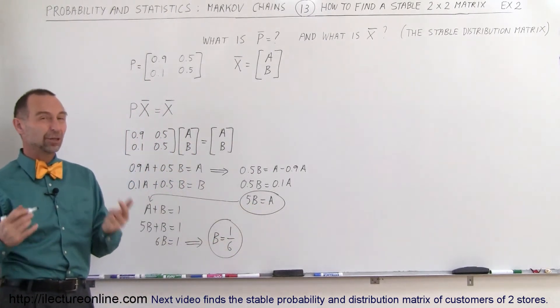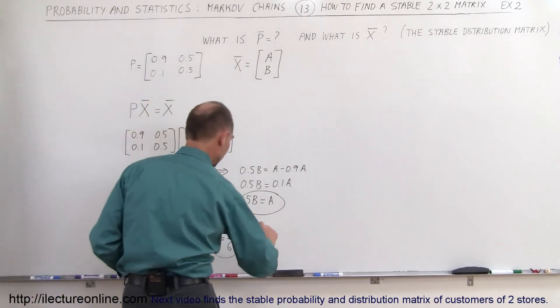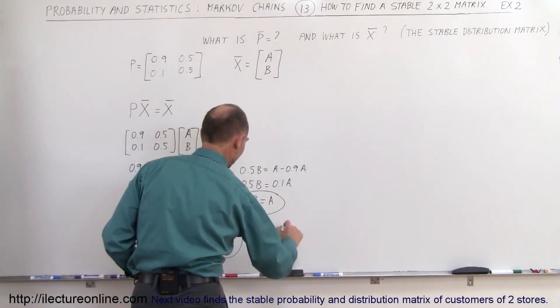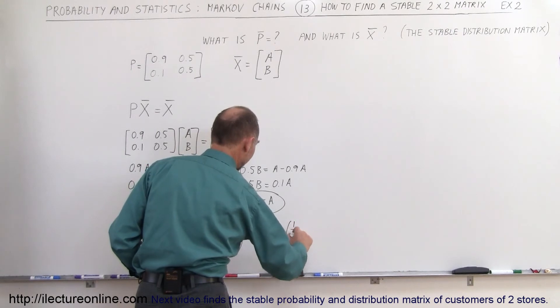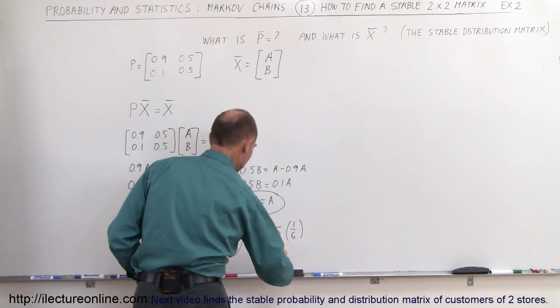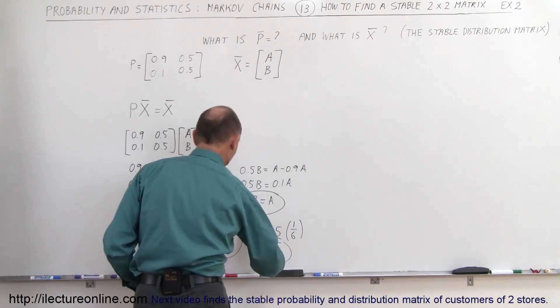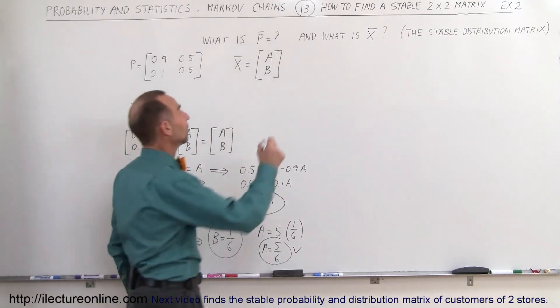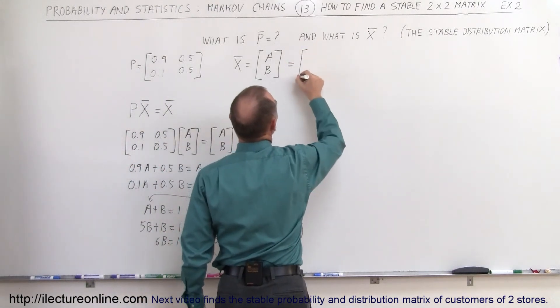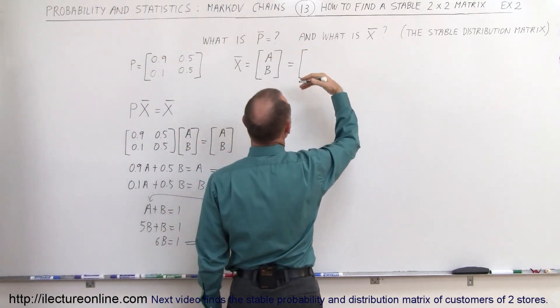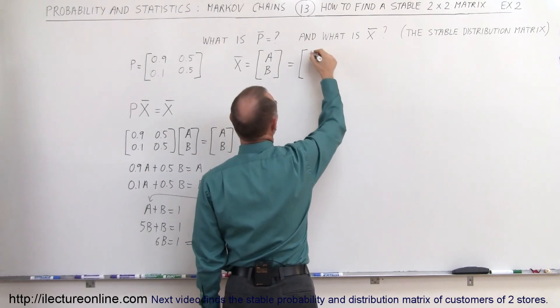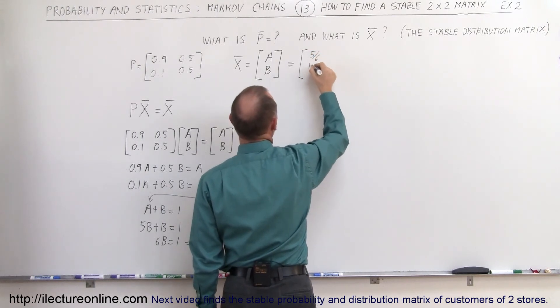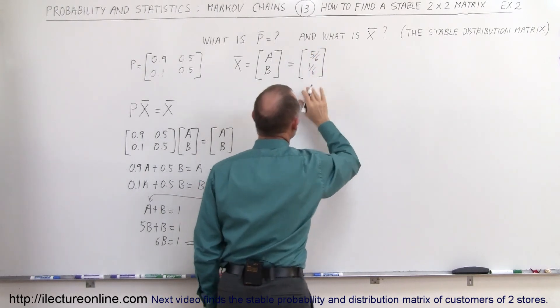Well, if B is equal to 1 divided by 6, and A is 5 times B, we can also find out what A is equal to. A is equal to 5 times 1 sixth, or A is equal to 5 sixths. So these are the two final states for A and B, which we can plug in here. And that then gives us the final distribution, or what we call stable distribution matrix. This would be 5 sixths and 1 sixth.